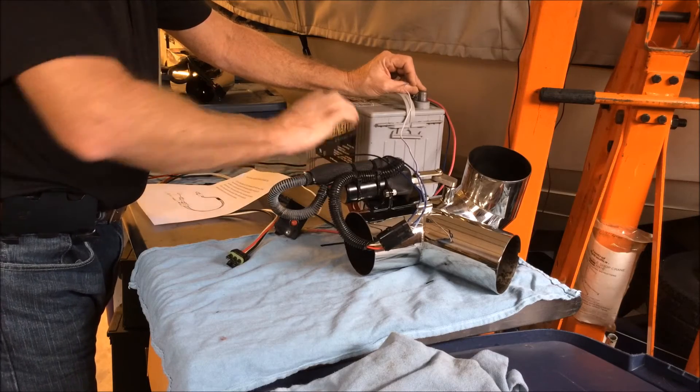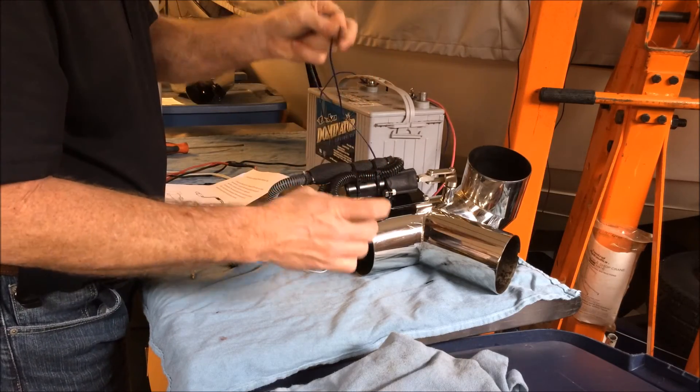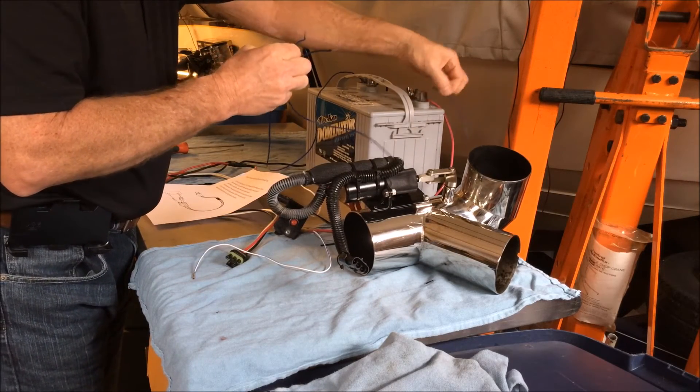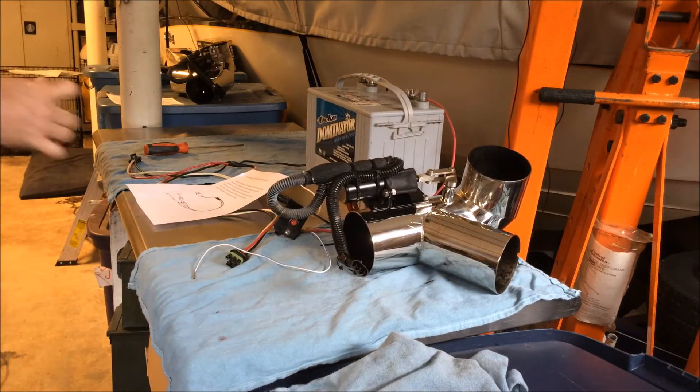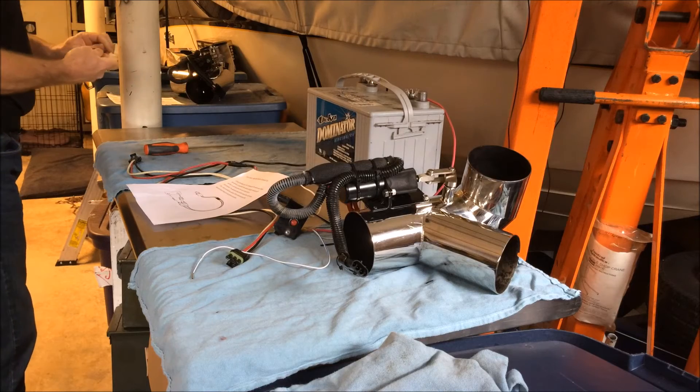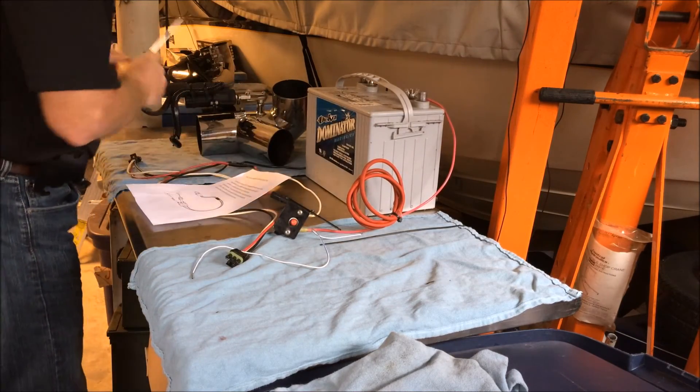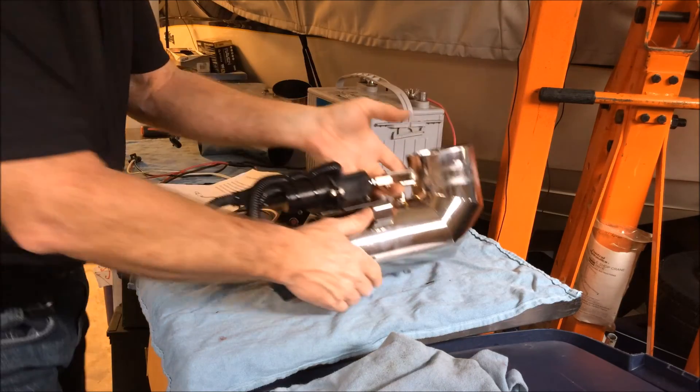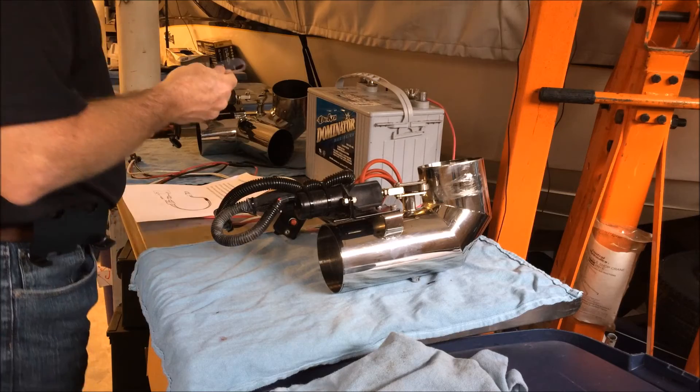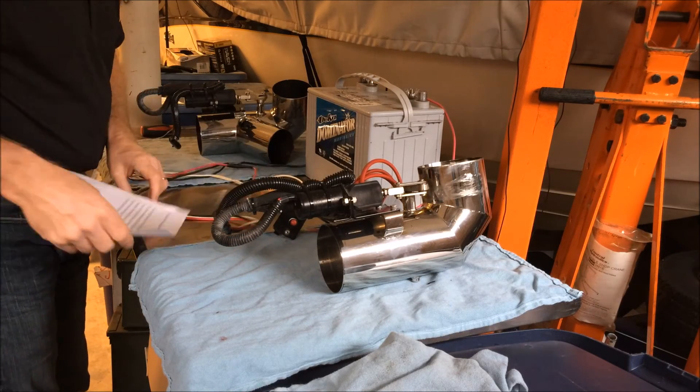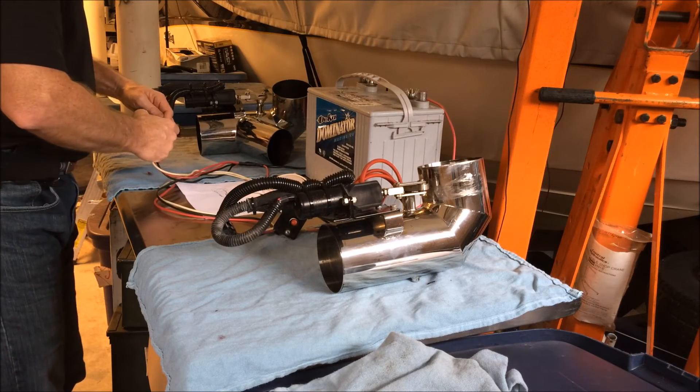And the wires were not getting hot when I would leave it powered up on the starboard diverter valve either. So that basically tells me that my connections on the three pin connectors from the harness to the diverter valves are good. And it tells me that the butt splices in the center of the harness are good. And that my problem lies either in the solenoid or the diverter valve itself for the starboard diverter valve.